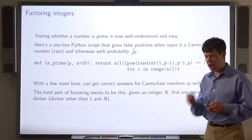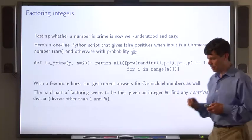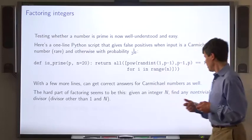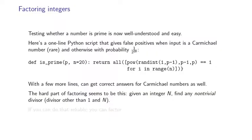So the hard part of factoring is this: given an integer n, find any non-trivial divisor, that is a divisor other than 1 and n itself. If you can do that reliably, then you can factor the integer all the way down to prime numbers.